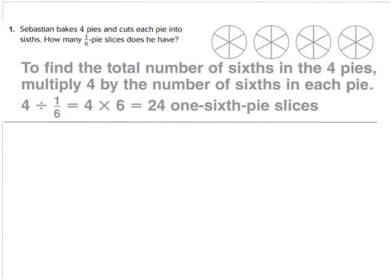Now I have question number one down for you, so you can walk through it with me to see what we're doing. Number one says, Sebastian bakes four pies and cuts each pie into sixths. How many one-sixth pie slices does he have? So we drew four pies and cut each pie into six pieces by making a vertical line and two horizontal lines on each one. Now count up all the one-sixth pieces. We have six, twelve, eighteen, twenty-four. So there are twenty-four one-sixth pie slices. A whole number divided by a fraction will equal a whole number because you're asking how many of the one-sixth pieces.